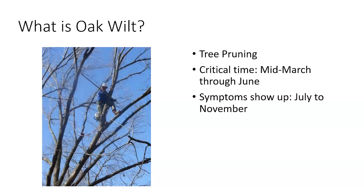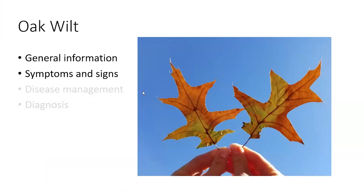Unfortunately, one of my clients called me last week — he accidentally trimmed his tree last year around March or April, and his tree started showing symptoms in July. From July to November, all the leaves shed. This year, no new leaves pushed out — only some suckers growing from the base. I would say that tree is basically dead. You can see the severity of this disease and how quickly it can kill an oak tree.